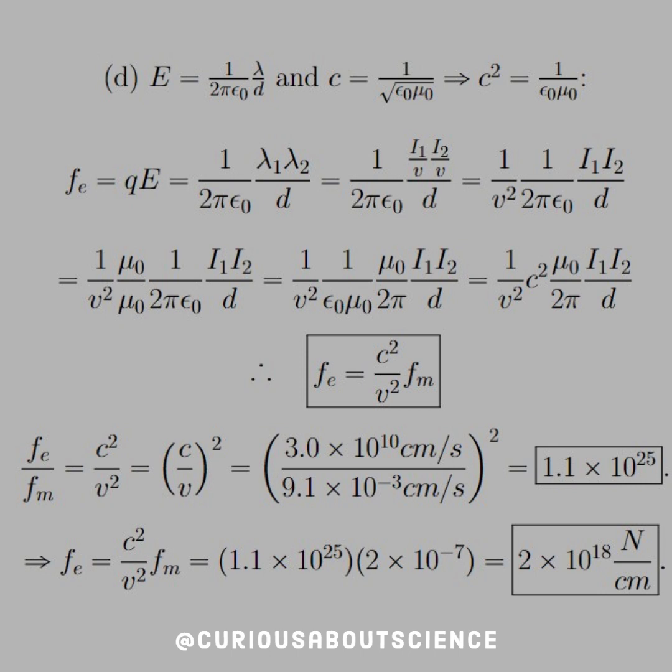So to find out how much bigger the force per unit length of the electric field is over the magnetic field, find a ratio Fe over Fm, which is C squared over v squared. Work through, and we have a ratio of 1.1 times 10 to 25th times larger.